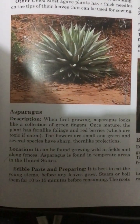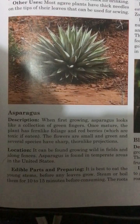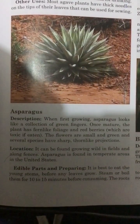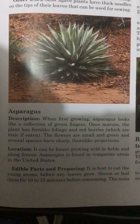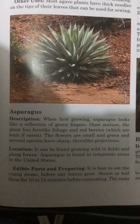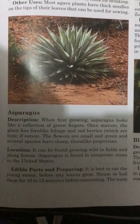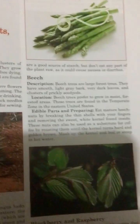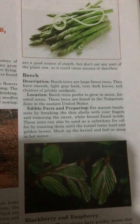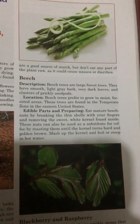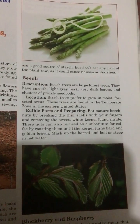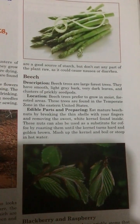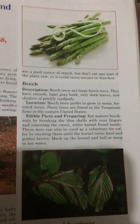Asparagus. Edible parts and preparing: It is best to eat the young stems before any leaves grow. Steam or boil them for 10 to 15 minutes before consuming. The roots are a good source of starch, but don't eat any part of the plant raw, as it could cause nausea or diarrhea.